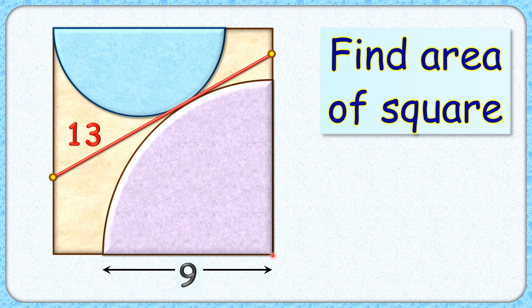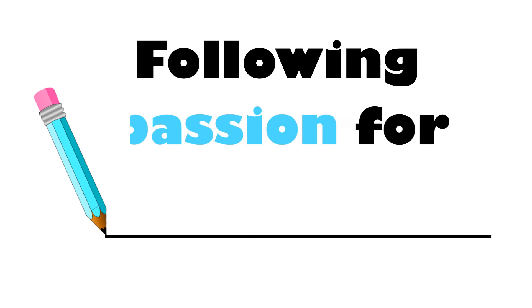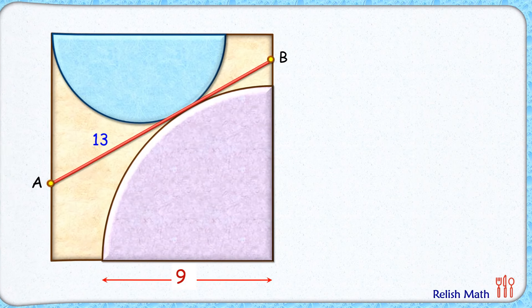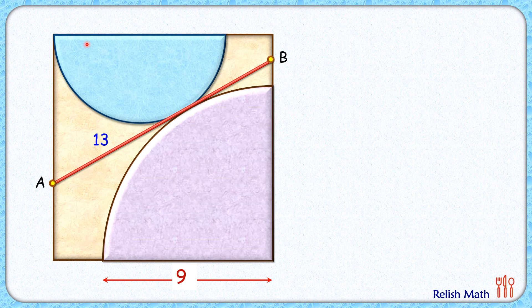Let's check the solution. Let's take the center of the semicircle as point C and the center of the quadrant as point D. This common point between them, let's take it as point E.